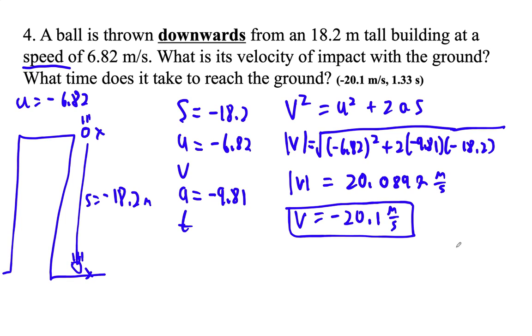Now what time does it take to reach the ground? I'm going to use no S for that. So negative 20.0897, I'm not going to use the rounded value, equals negative 6.82 plus negative 9.81 times t.